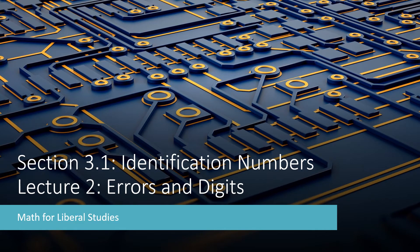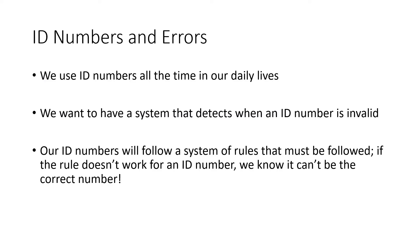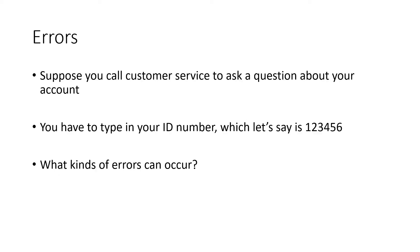This is the second video for section 3.1 on identification numbers. In this lecture, I'll be talking about errors and digits. As we talked about in the previous lecture, we use ID numbers all the time in our daily lives. And what we want to do is have a system that detects when an ID number is invalid — a system of rules that our ID numbers have to follow. The purpose of the rules is to try to detect errors that can happen when we enter our account number.